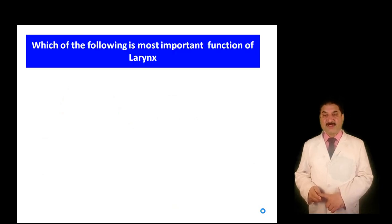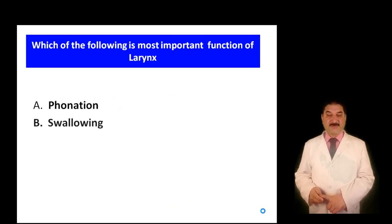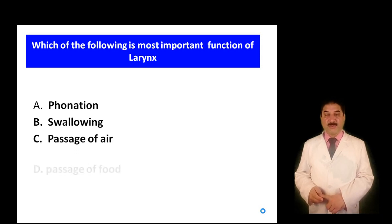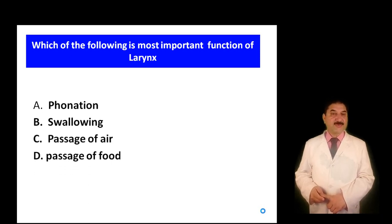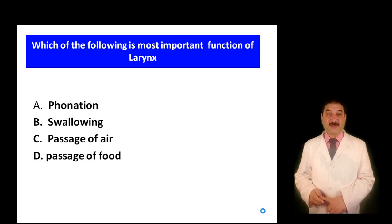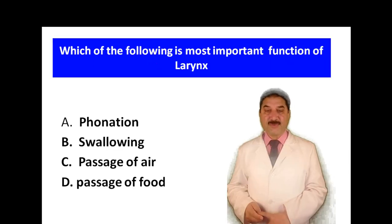Which of the following is the most important function of the larynx? A: phonation; B: swallowing; C: passage of air; D: passage of food. Though the larynx is called the voice box, its main function is the passage of air. We can live without voice but we cannot survive without air.